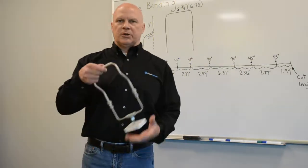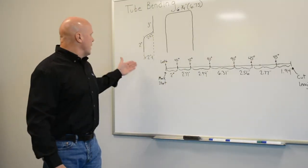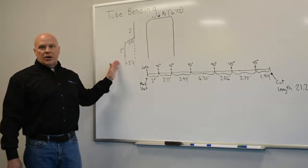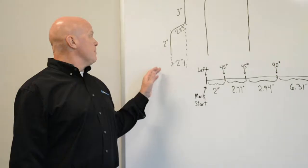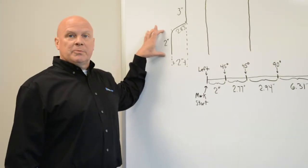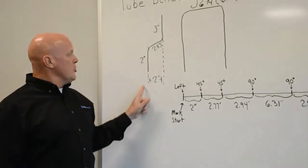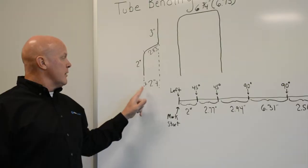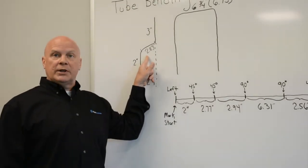So first off, if I want a tube to look like this, I have drawn on the board up here how long these particular legs are going to be to fit a particular fixture. My first leg is going to be a two inch leg followed by a two inch kick out. This two inch offset is going to be, in the end, 2.83 inches.